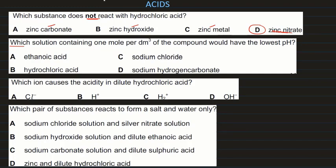Which solution containing one mole per dm³ of compound would have the lowest pH? The lowest pH means a strong acid. Ethanoic acid is a weak acid; sodium chloride is a salt that is neutral; hydrochloric acid is a strong acid — so hydrochloric acid is the answer.